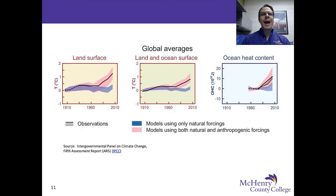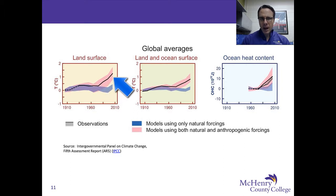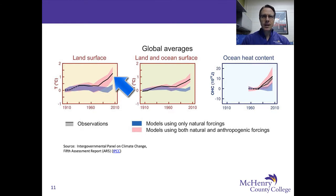When you add the human element — the anthropogenic element — we see that in the pink part of this graph, after 1960, there is a relatively steep climb in the expected temperature of the land surfaces. Computer models model that; that is, they produce that information.